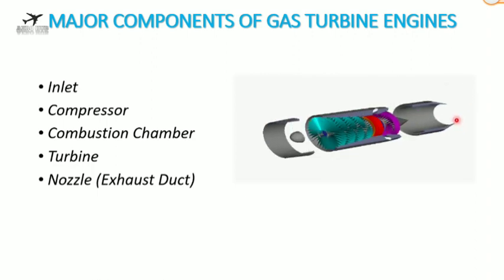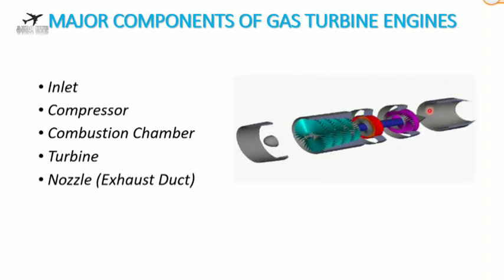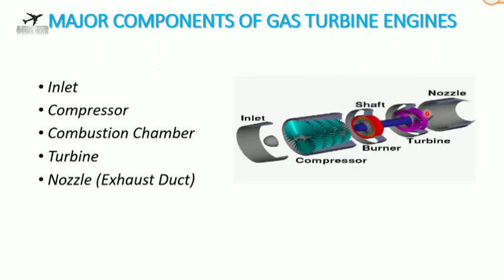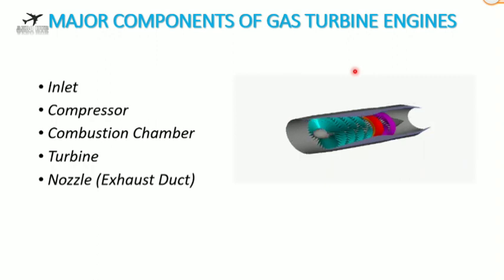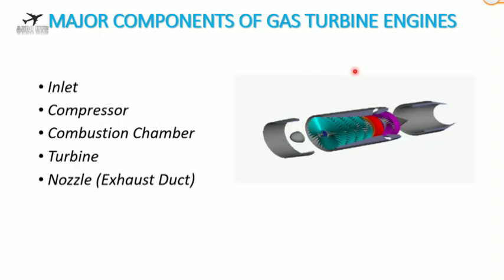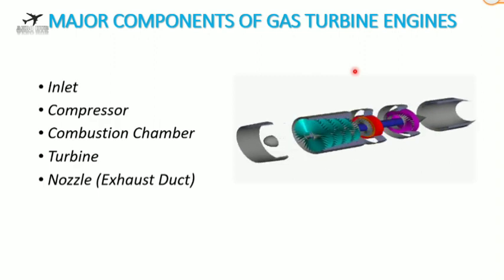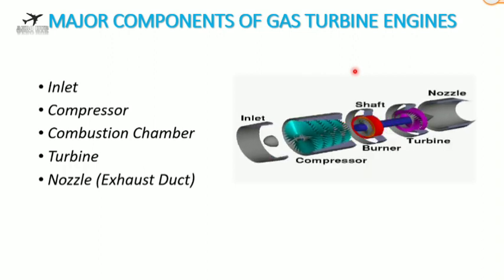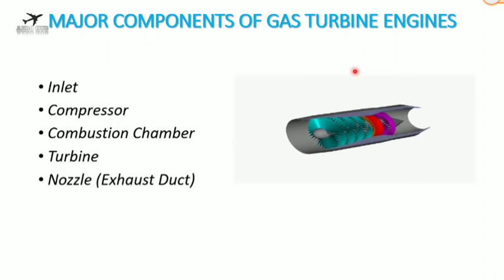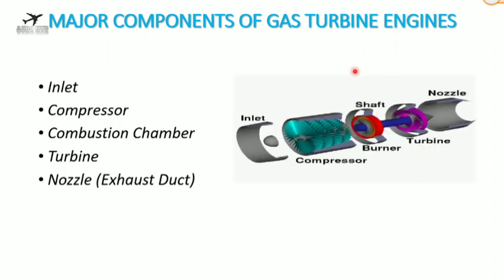The exhaust duct or nozzle takes the relatively high-pressure, low-velocity gas leaving the turbine and accelerates it to higher speeds. Gas turbine engines work on the Brayton cycle. In a gas turbine engine, all events take place simultaneously, whereas in a reciprocating engine each event follows the preceding one. Gas turbine engines operate at higher speeds, and noise and vibration are greater in piston engines compared to gas turbine engines.